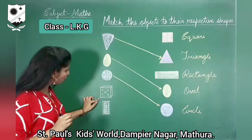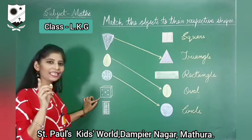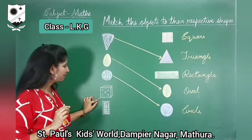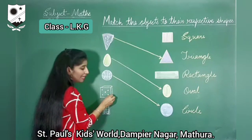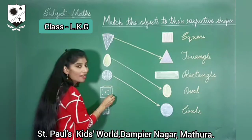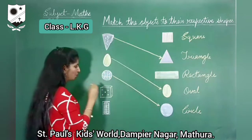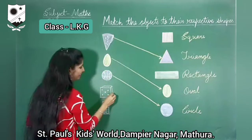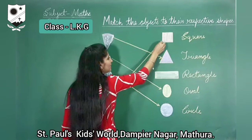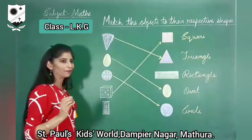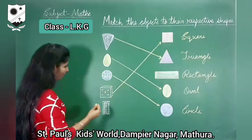Okay, what is this? Dice. Okay, I think Ludo dice. What you have to do? You have to match these shapes. Triangle? Rectangle? No. Square. Okay. Match these dice with their respective shape. Square shape.